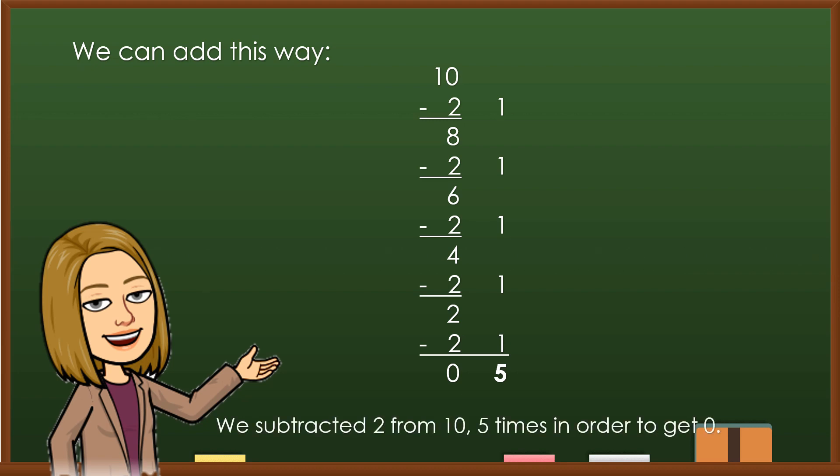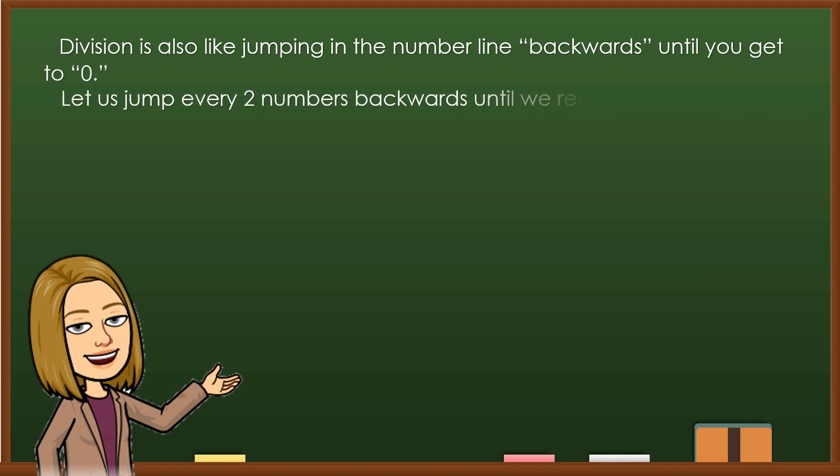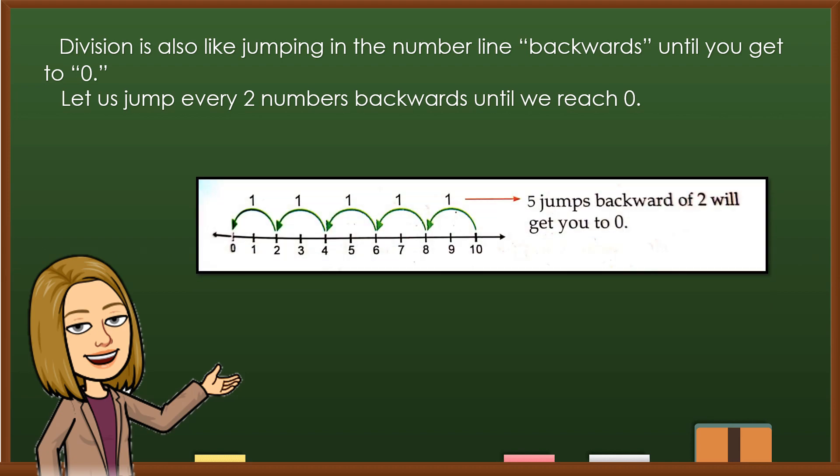We subtracted 2 from 10 five times in order to get 0. Let us jump backwards until you get to 0. Let us jump every 2 numbers backwards until you reach 0.